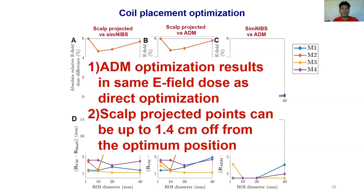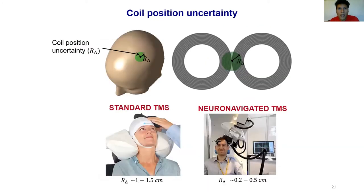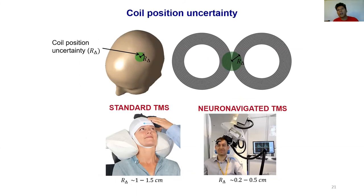To reiterate, ADM yields the same electric field dose as direct optimization, and scalp-projected points can be up to 1.4 centimeters off the optimum. However, coil placement protocols have limited precision — a practitioner could have placement error as high as 1.5 centimeters, and even neuro-navigated protocols can have errors as large as 5 millimeters. Because ADM computes electric fields so rapidly for many coil positions and orientations, it can be used to calculate uncertainty in the electric field dose resulting from these placement uncertainties.